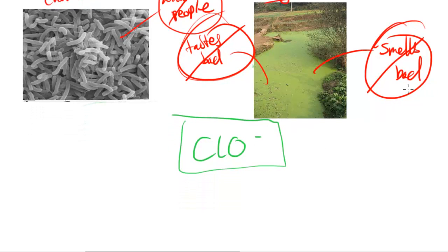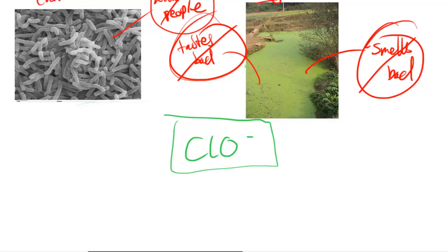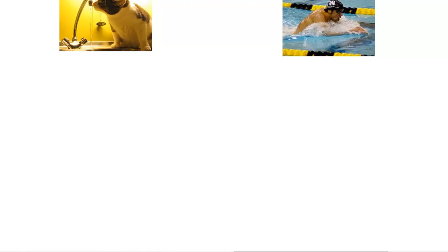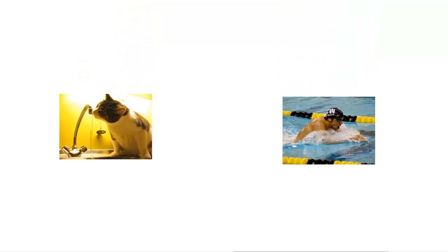Now, these CLO minus ions, this application of the CLO minus ions leads to some good advantages. First of all, I have a picture here of a cat taking a drink of some tap water. If it wasn't for those CLO minus ions, this cat would probably not be able to drink this water and survive for that long. It makes water safe for drinking.